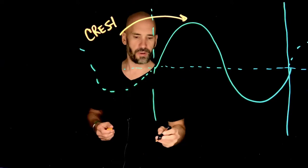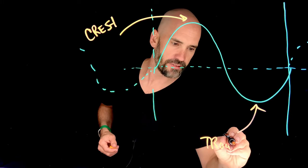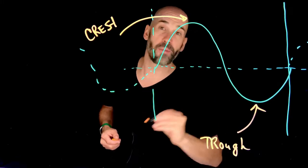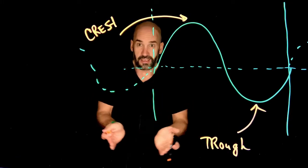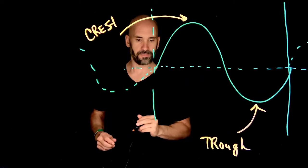And the lowest part on a wave here is called the trough. Maybe you guys have heard that some farm animals eat out of a trough. It's basically kind of like a bowl thing, just like the bottom of a wave is like a bowl thing.